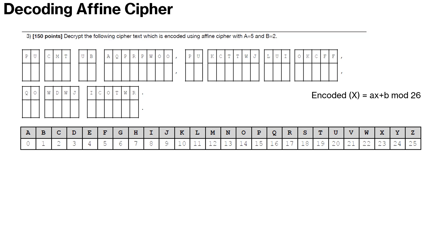Encoded value is equal to ax plus b mod 26. In this case it will be 5x plus 2 mod 26.